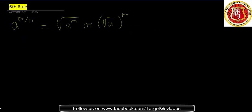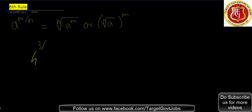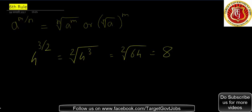The sixth rule covers fractional indices: something raised to m upon n. For example, 4 raised to 3 by 2 — this means the square root of 4 cubed, which is the square root of 64, which equals 8. The numerator 3 is the power and the denominator 2 is the root. If you remember these six rules, you will never face a problem in simplification and approximation related to this.